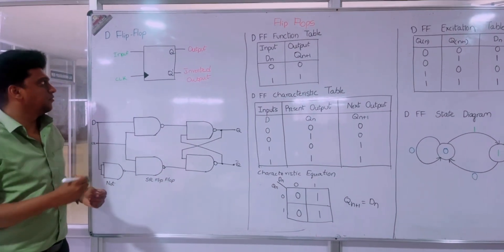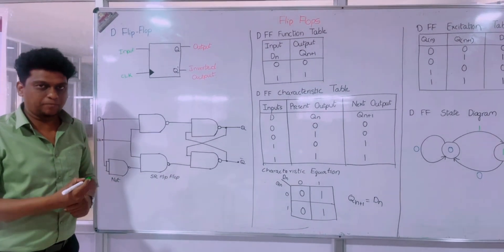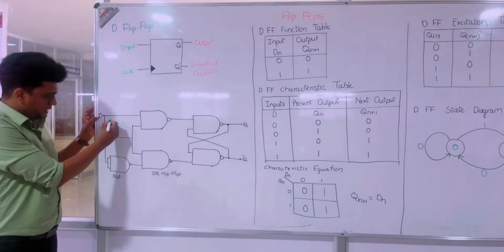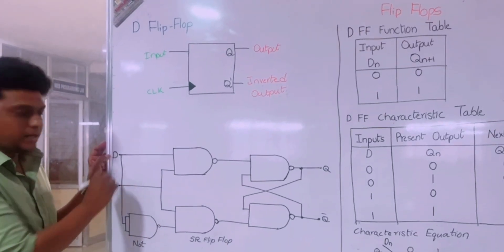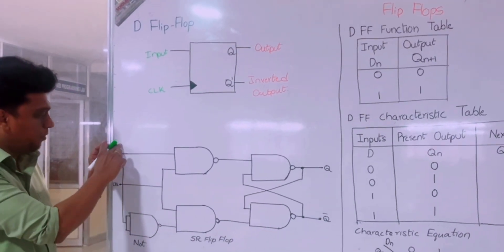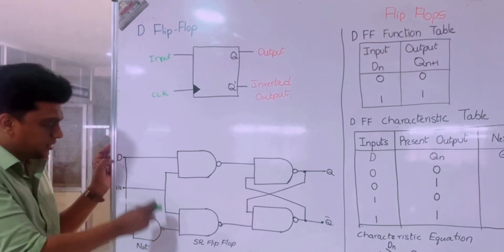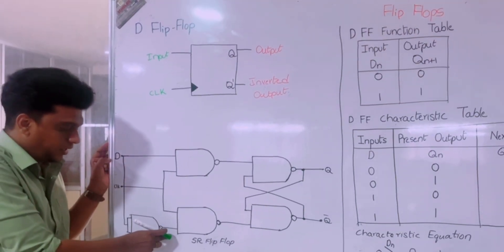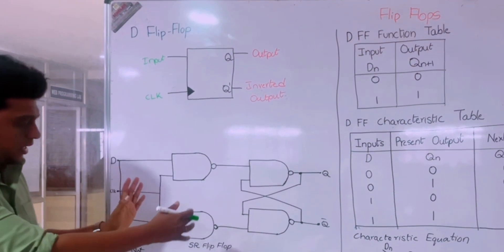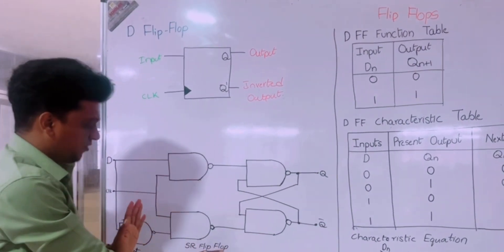D flip-flop is the third type of flip-flop. D flip-flop means data flip-flop or delay flip-flop. In this circuit diagram, we are using a NOT gate with the data input, so it inverts the input. If we provide one, here we are getting zero. And if we are putting zero, here we are getting one as output.